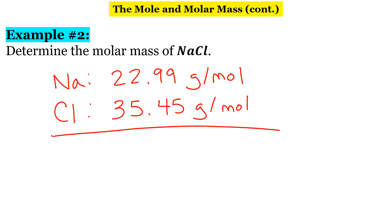And all we're going to do in this case is we're going to add these two up. So, 22.99 plus 35.45 gives us a total molar mass of 58.44 grams per mole.